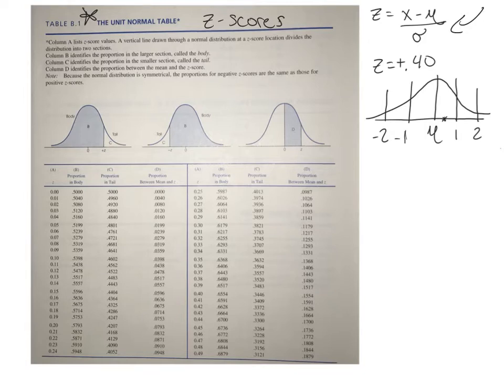We'll be able to see what proportion or what's the probability of selecting a score of 0.4. We'll also be able to find out a proportion of finding a score less than 0.4 and a score greater than 0.4.